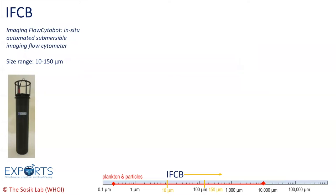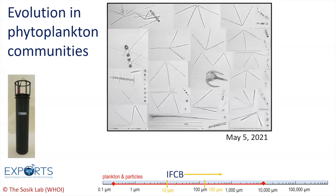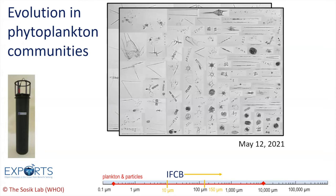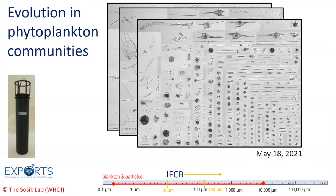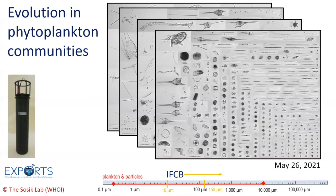Our first technique is the IFCB, which stands for Imaging Flow Cytobot. This device is an in-situ automated submersible imaging flow cytometer that photographs tiny particles in the ocean from 10 to 100 micrometers in size. During our North Atlantic cruise last May, the IFCB collected a total of 4.5 million images from depths ranging from the surface to 225 meters. Thanks to the deployment of this device, we were able to see the evolution in phytoplankton communities. As the spring bloom developed, we saw an increase in phytoplankton production and a shift to more complex organisms. These images provide useful information to assess the growth of phytoplankton and sinking particles in an ecosystem and how effective they are at taking carbon from the atmosphere and getting it to the deep ocean.